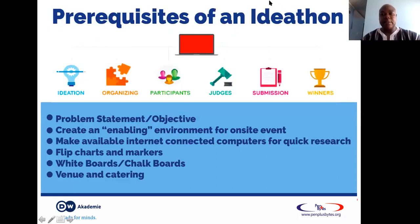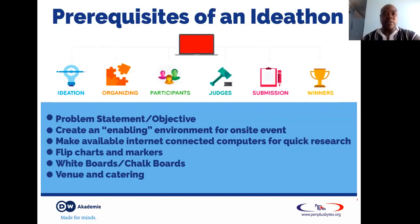A few prerequisites for organising an ideathon: first, you need a problem statement — the idea or objective. The problem statement clearly defines what you want to achieve, the why, what exactly you need, and your target audience. Second, you need to create an environment where people can easily express their views without inhibitions — whether an open space, a garden, or a classroom structure. There's no strict rule; adapt to what works for your institution.